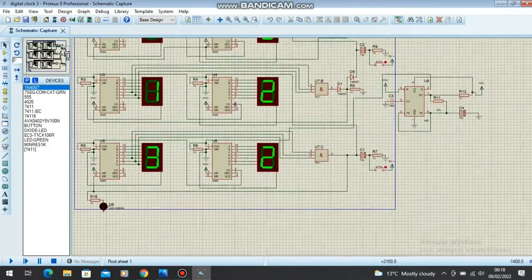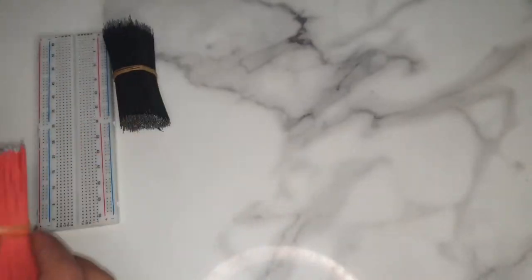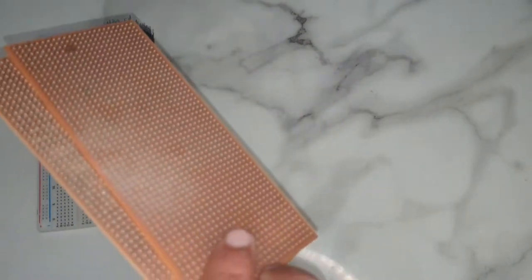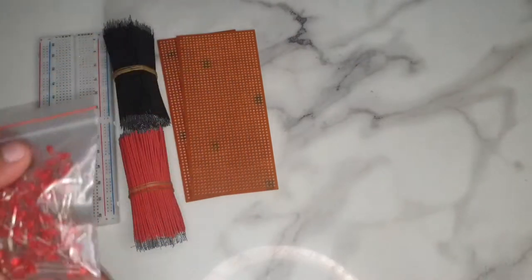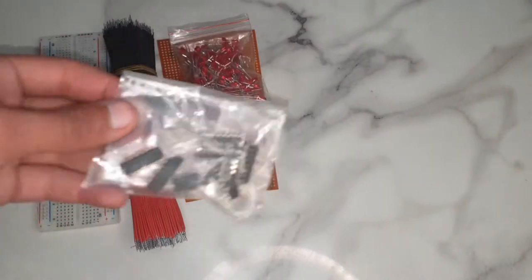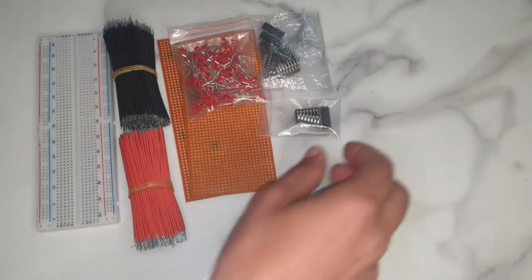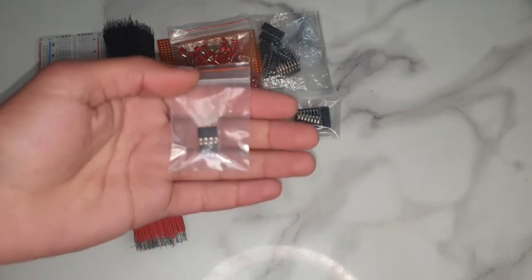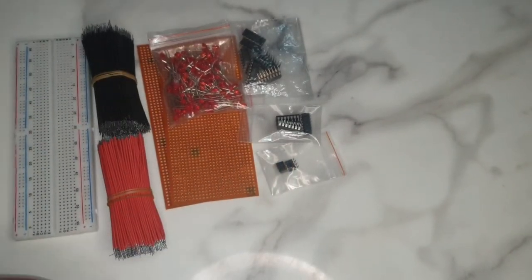First of all, I have designed this clock at Proteus 8 Professional so that I can clearly understand how these components work together to make a clock. For making this clock we will need a breadboard, some jumper wires, two PCB boards with single dotted copper wire, some LED lights of your favorite color, six CD4026 seven segment display ICs, one 7411 AND gate IC, one 555 timer IC, and we will need some bases for placing these ICs on the PCB board.